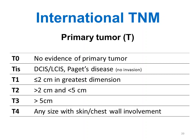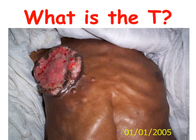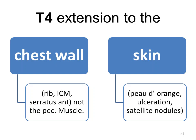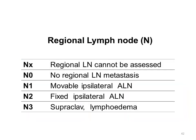T0 means no evidence of primary tumor. TIS is carcinoma in situ — either ductal carcinoma in situ (DCIS) or lobular carcinoma in situ (LCIS); in situ means there is no invasion. T4 includes extension to the chest wall or skin. If the ribs, intercostal muscles, or the serratus anterior are involved, this is chest wall involvement — but the pectoralis major alone does not count. Skin involvement includes peau d'orange, ulceration, or satellite nodules.